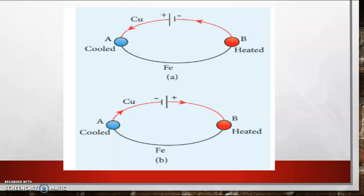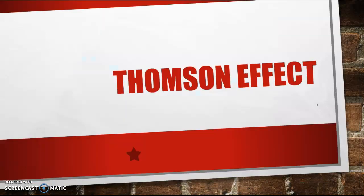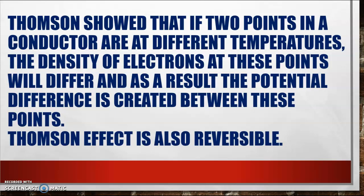Like Seebeck's effect, Peltier's effect is also reversible. When the two junctions are reversed, the direction of the current is also reversed. Now let's discuss about Thomson's effect. Thomson showed that if two points in a conductor are at different temperatures, the density of electrons at these points will differ, and as a result, potential differences are created between these points. This is called Thomson's effect.